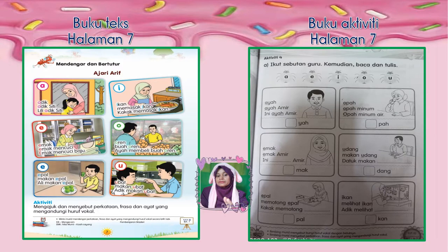Baiklah murid-murid, sila rujuk buku teks pada halaman 7. Perhatikan teks yang diberikan. Kemudian, setelah kita tamat kelas, kita akan menyiapkan buku aktiviti di halaman 7 — pilih huruf vokal yang sesuai bagi perkataan bergambar yang diberikan. Selamat menjawab.